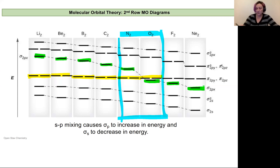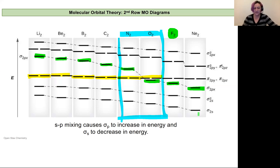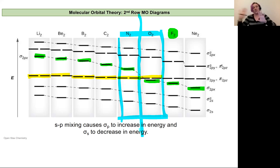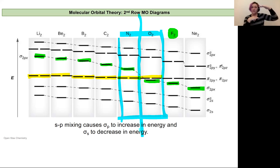Fluorine has a pattern where the orbitals are fairly equally spaced, and neon might be a better example of that. Because of SP mixing, we see a higher energy sigma than we'd expect for those combined P atomic orbitals. The key line to remember is between nitrogen and oxygen: to the right of that line, sigma is below pi; to the left, sigma is above pi.